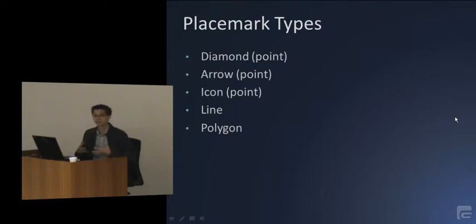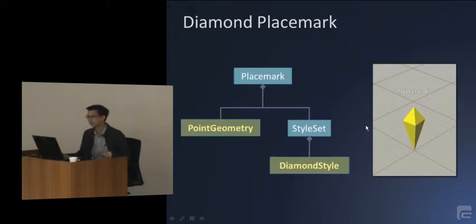So the types, the combinations of geometries and styles which are valid. Just briefly, there's a diamond point. There are three looks for points, lines, and lines and polygons have only one look each. So if you created a placemark, assign it a point geometry, and give it a diamond style, this is what you get.